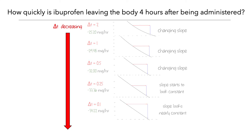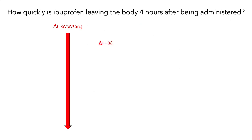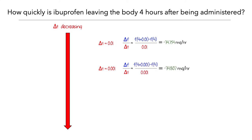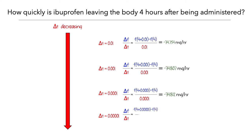What would we see if we continued this process? When we used a delta t of one hundredth of an hour, the average rate at which ibuprofen is leaving the body is –34.754 mg per hour. When we used a delta t of one thousandth of an hour, the average rate is –34.807 mg per hour. When we used a delta t of one ten-thousandth of an hour, the average rate is –34.812 mg per hour. And when we used a delta t of one hundred-thousandth of an hour, the average rate is –34.813 mg per hour. So as we make the time interval smaller, these average rates appear to be getting closer to a particular number — roughly –34.813 mg per hour.